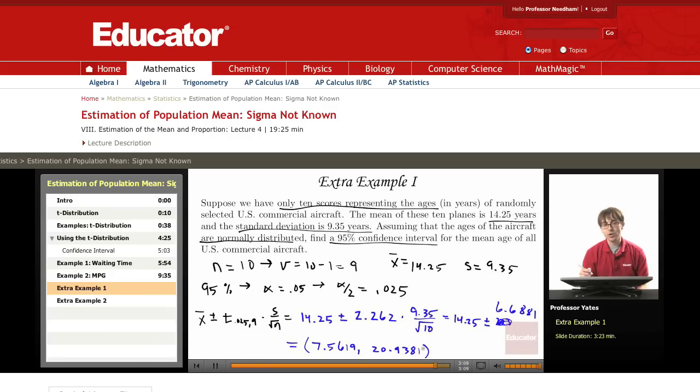So if we're trying to interpret that, we would say with 95% confidence, the mean age of all U.S. commercial aircraft is between 7.5619 and 20.9381 years.